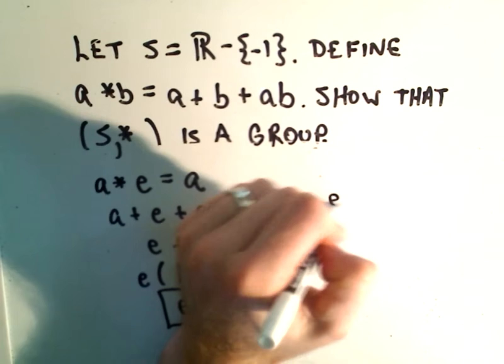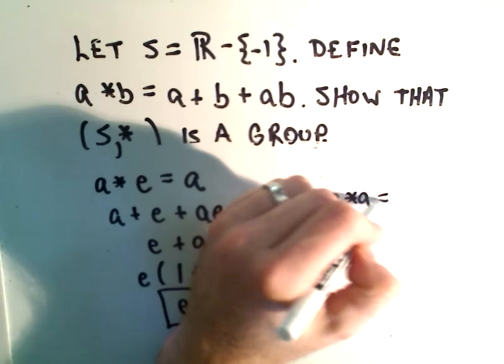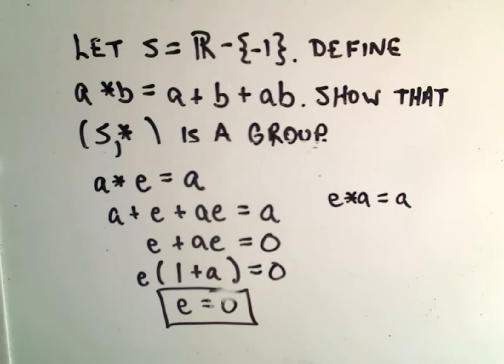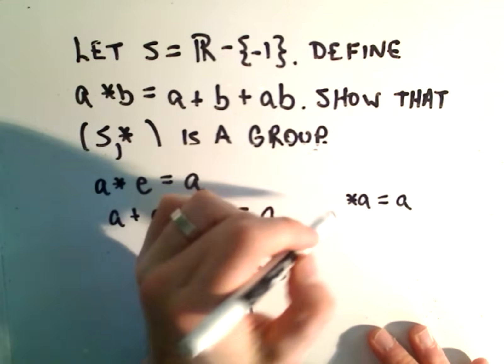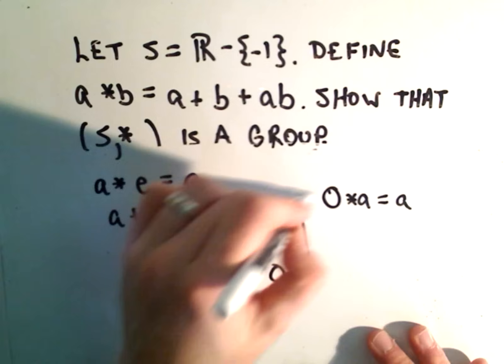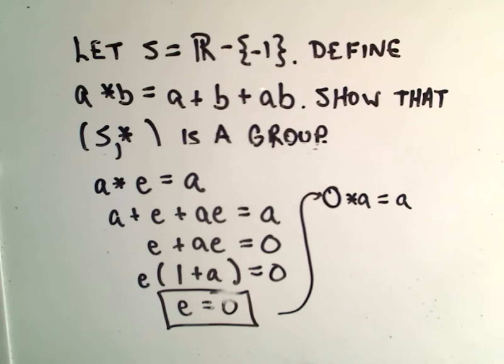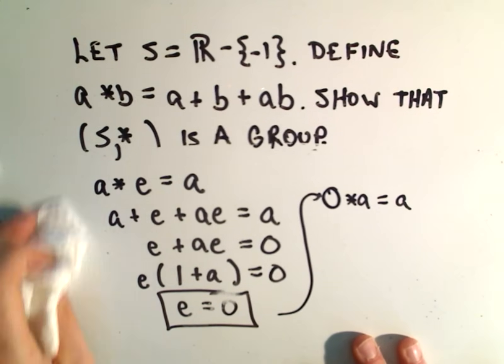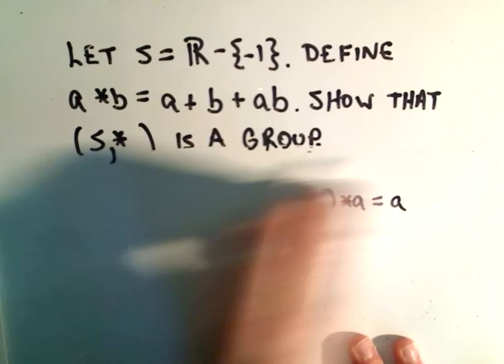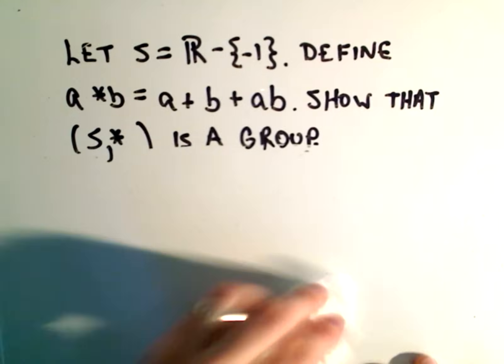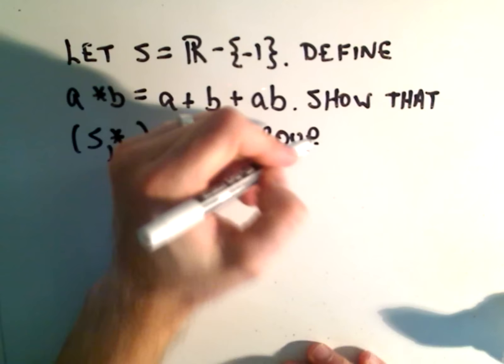And you can check that if you do e star a, you'll also get a back. Again, in this case, using the identity element zero. So there's our identity element. And it's unique because we found it directly algebraically. We were able to solve that equation. It had a unique solution. So there's a unique identity element.